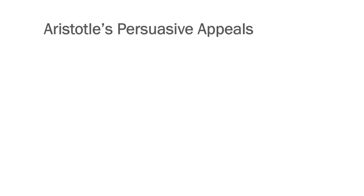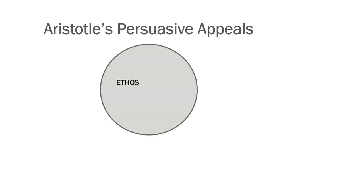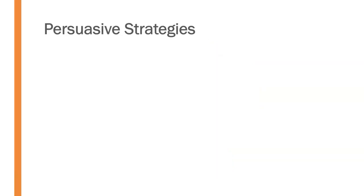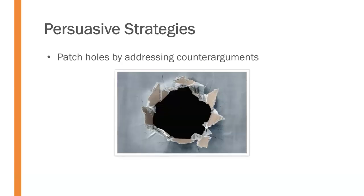When we think about Aristotle's persuasive appeals, we need ethos for credibility, pathos for emotional appeals, and logos for logical appeals. At the intersection of all three is where you'll find your most effective persuasion. In terms of persuasive strategies, we also want to patch holes by addressing counter-arguments. We have to anticipate what arguments the audience might have to our claims and appeals, and address those within the speech — preemptively patching those holes.